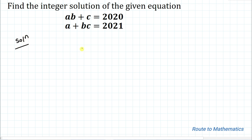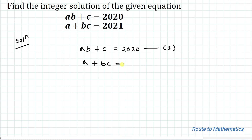We have AB plus C equals 2020 — let's take it as equation 1. The second equation is A plus BC equals 2021, which is our equation 2.